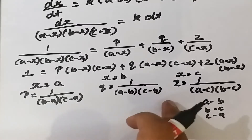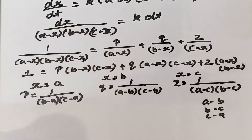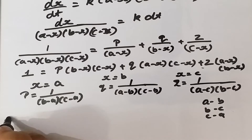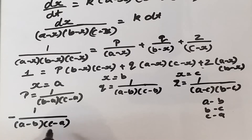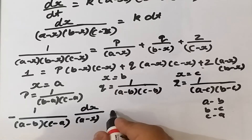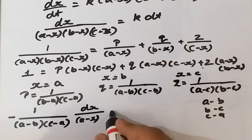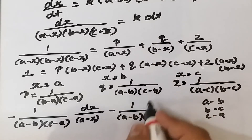Substituting all three terms back into the expression, we get: minus 1 upon (a minus b)(c minus a) · dx upon (a minus x), minus 1 upon (a minus b)(b minus c) · dx upon (b minus x), minus 1 upon (c minus a)(b minus c) · dx upon (c minus x) equals k dt.